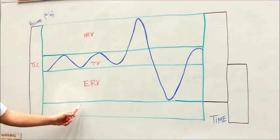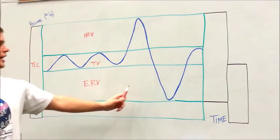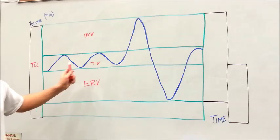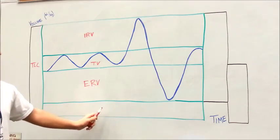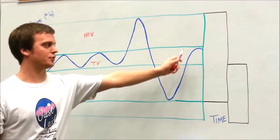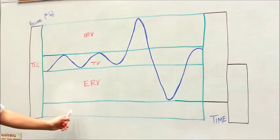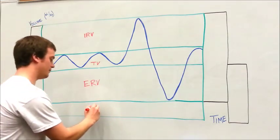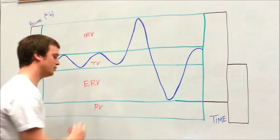Now, this green line down here, you'll note our blue line, meaning the volume of air in our lungs, never dips down past that green line. It abruptly stops at that green line and turns back positively. What is this green box down here? This is known as our RV, or residual volume.